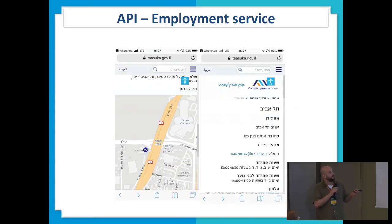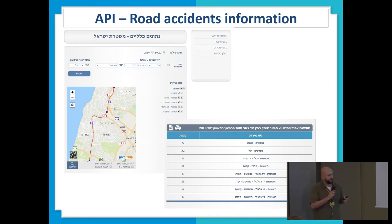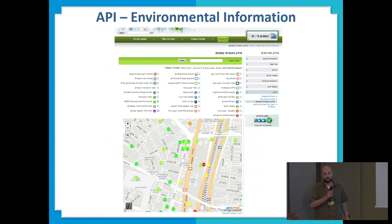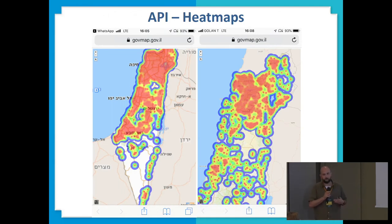A few examples: Israeli employment services show their locations on a map — quite a simple one. The Israel Police Force shows their accident database using our map, drawing road segments with accident data showing what kind of accident happened and how many casualties. The Israeli Ministry of Environmental Protection, which doesn't have its own public GIS, uses our API to show their information to the public. Another capability is creating heatmaps, which allow users to find better visualization of their information and gain more insights.